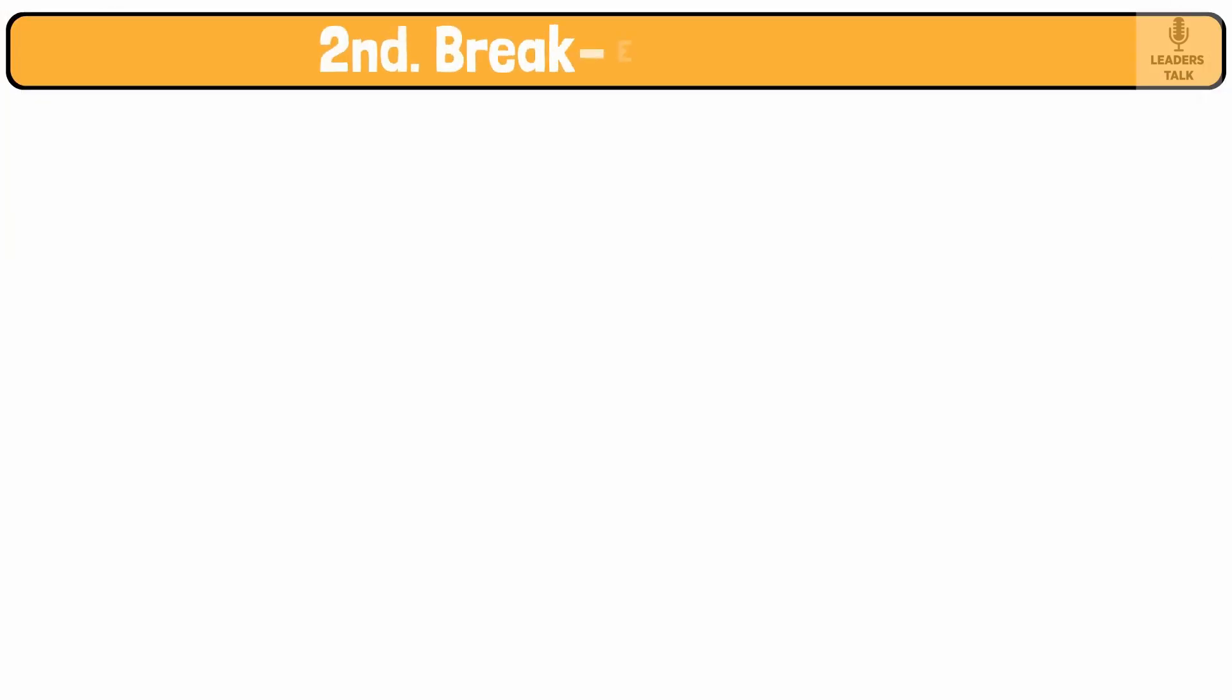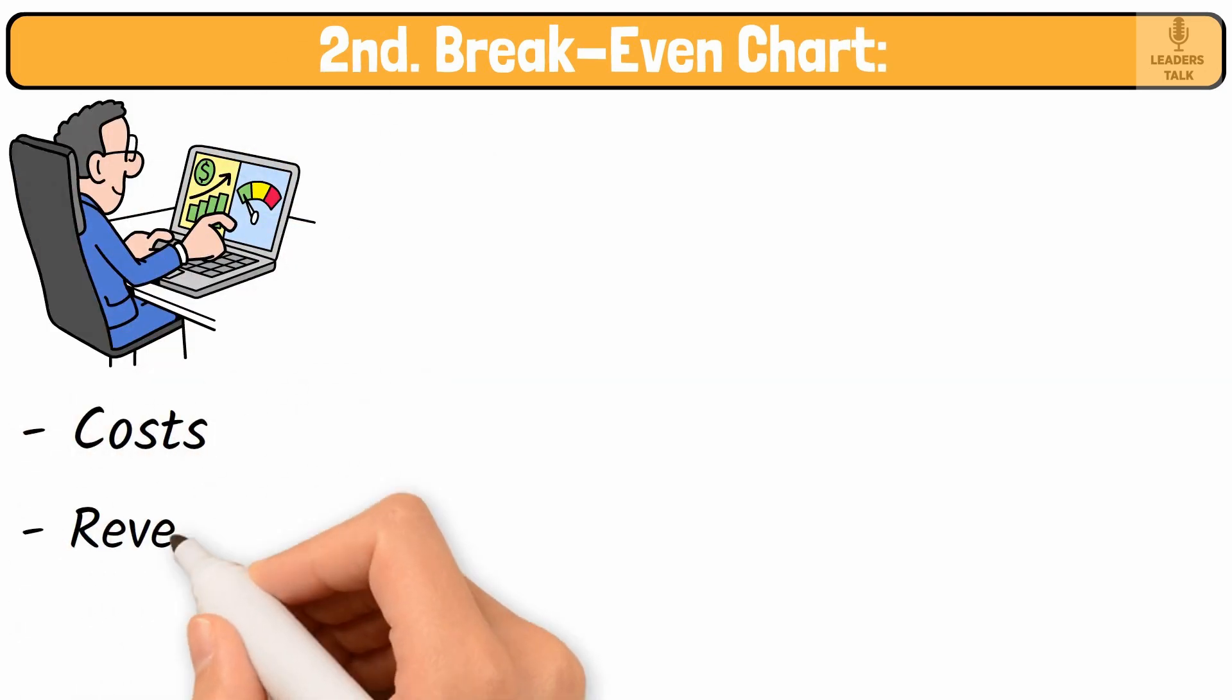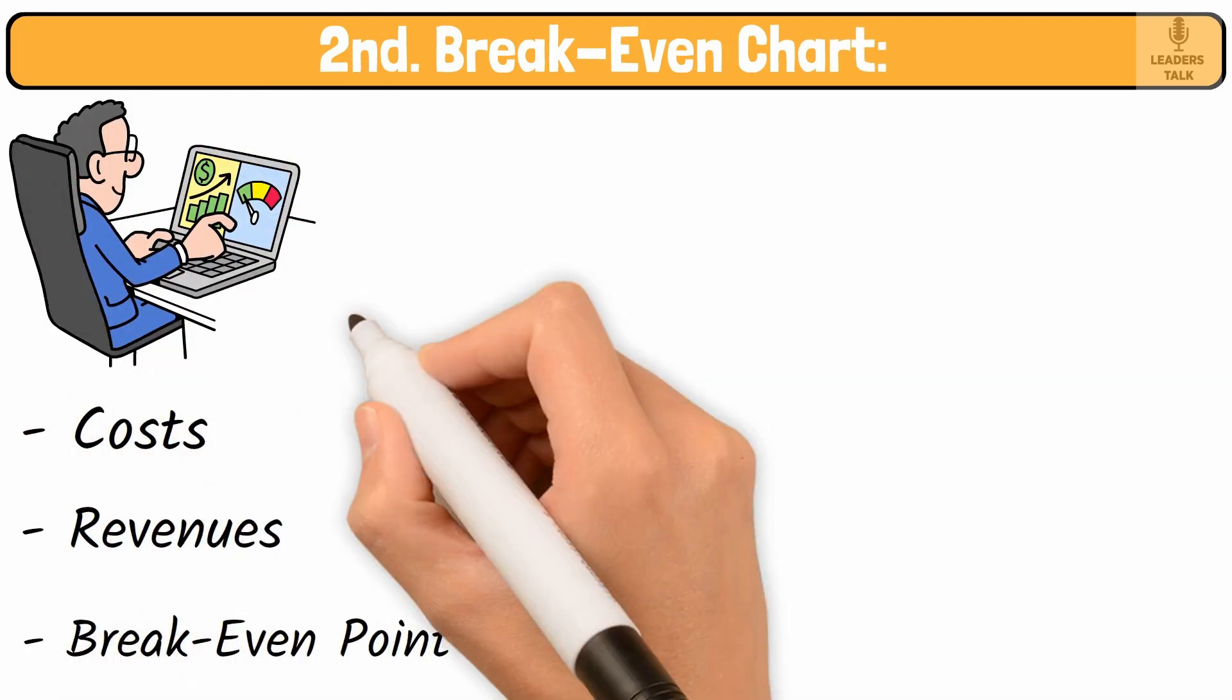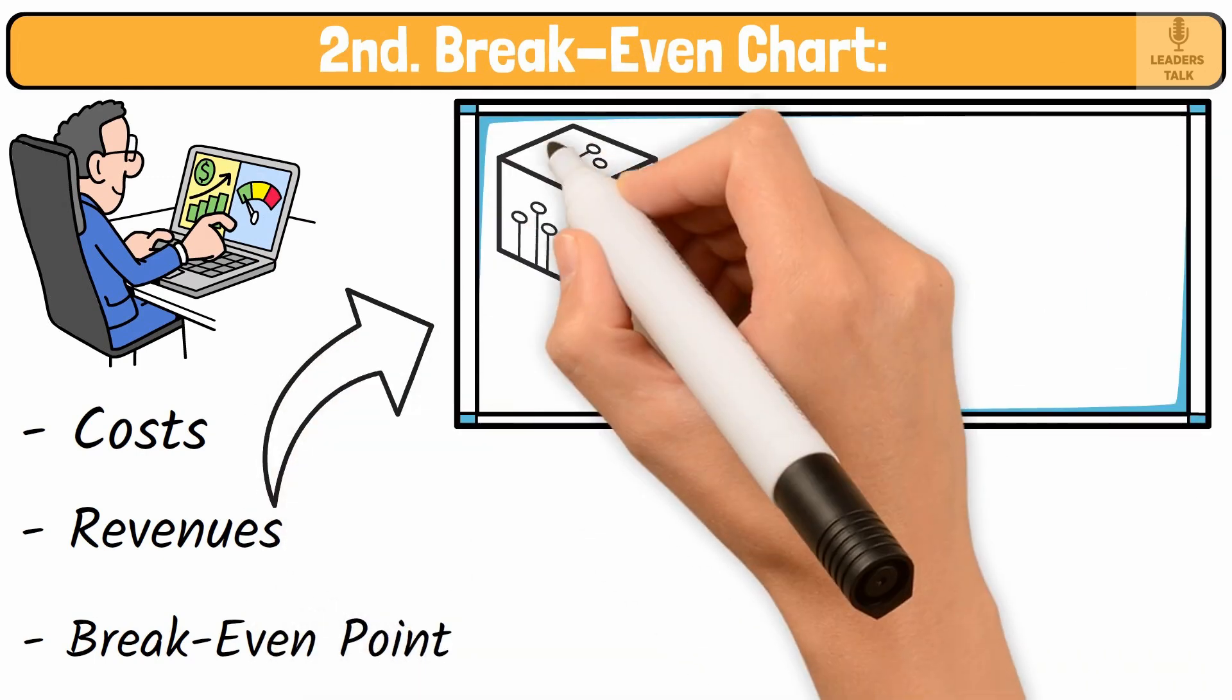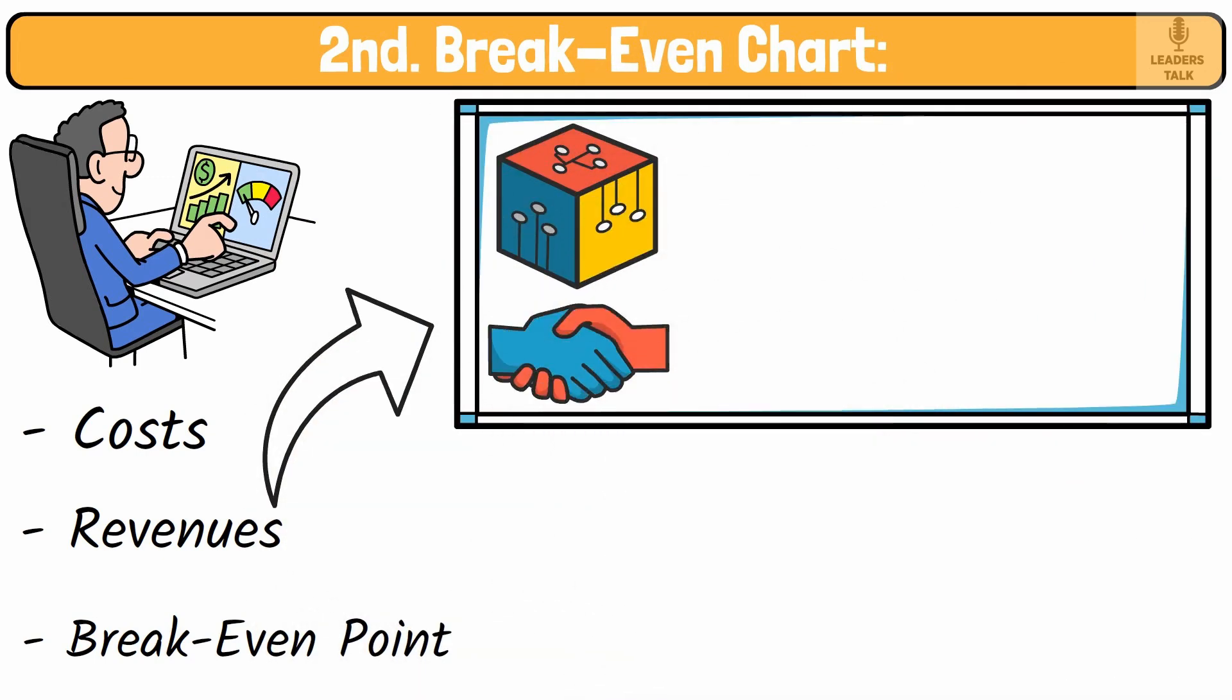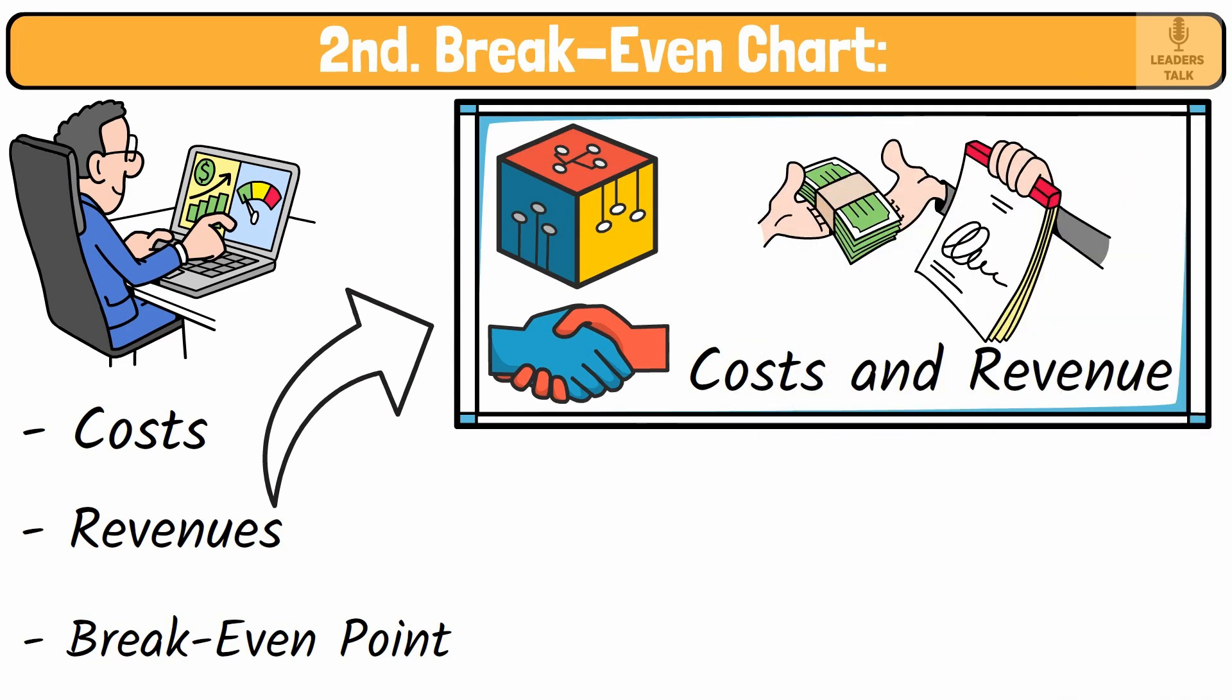Second, breakeven chart. A breakeven chart is a visual representation of your costs, revenues, and the breakeven point. It helps in identifying the number of units you need to sell to cover costs, the relationship between costs and revenue over a range of production levels, and profit or loss areas beyond the breakeven point.